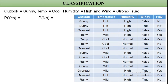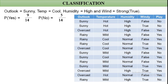First, we find the probability of 'Yes' (suitable to play) and the probability of 'No' (not suitable). The total number of conditions in the dataset is 14. Out of these, 9 are 'Yes', so P(Yes) = 9/14. The remaining 5 are 'No', so P(No) = 5/14.